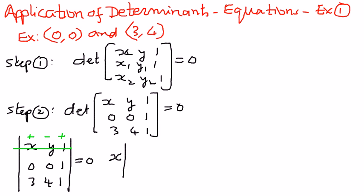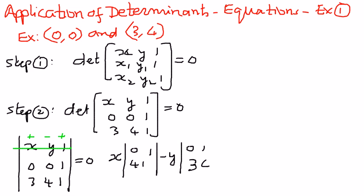x times the minor [0, 1; 4, 1], then minus y times the minor [0, 1; 3, 1], and then plus 1 times the minor [0, 0; 3, 4]. We equate that to 0.